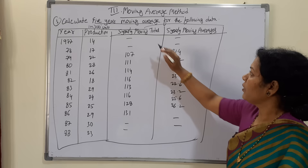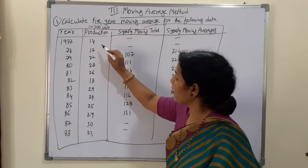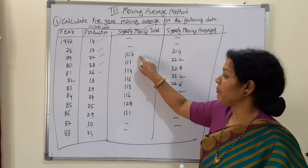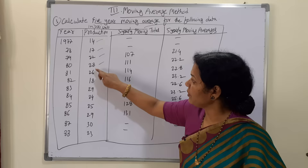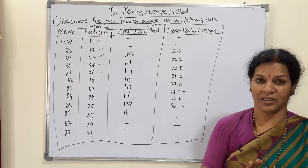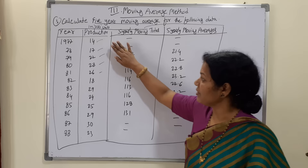For the first five years — 14, 15, 14, 17, 22, 28, 26 — if we total the first five years we get 107. We write 107 in the middle, exactly opposite the middle value. One, two, three, four, five — the middle one is the third — so opposite to that we write 107.